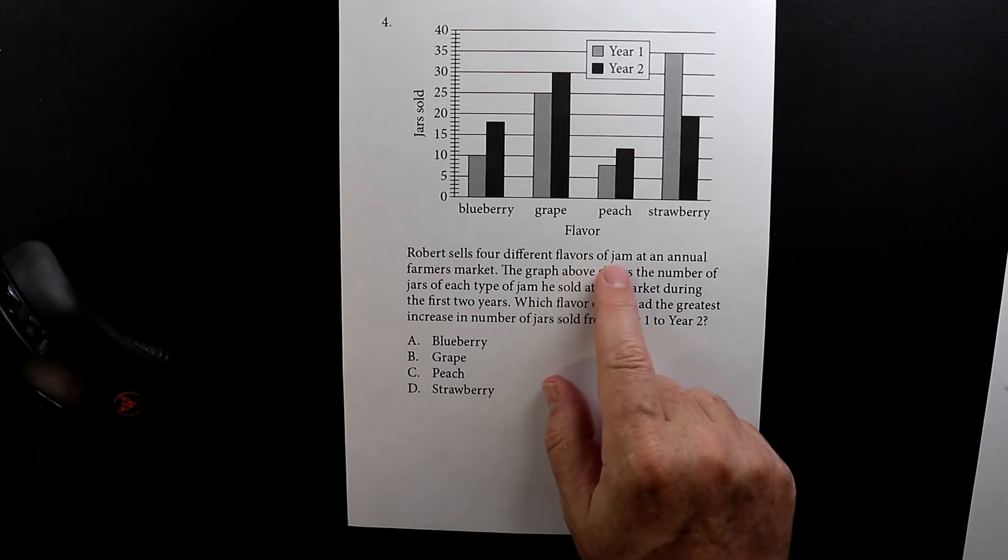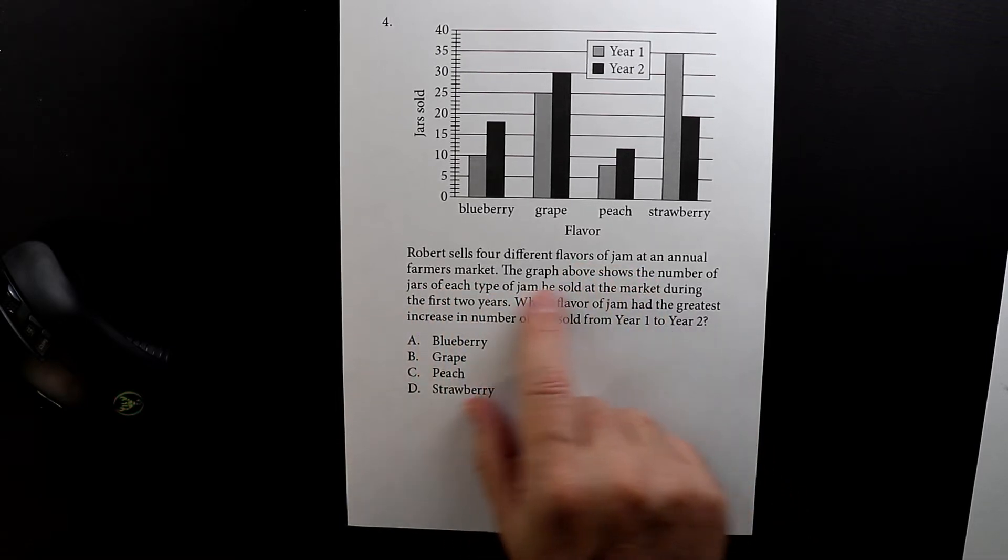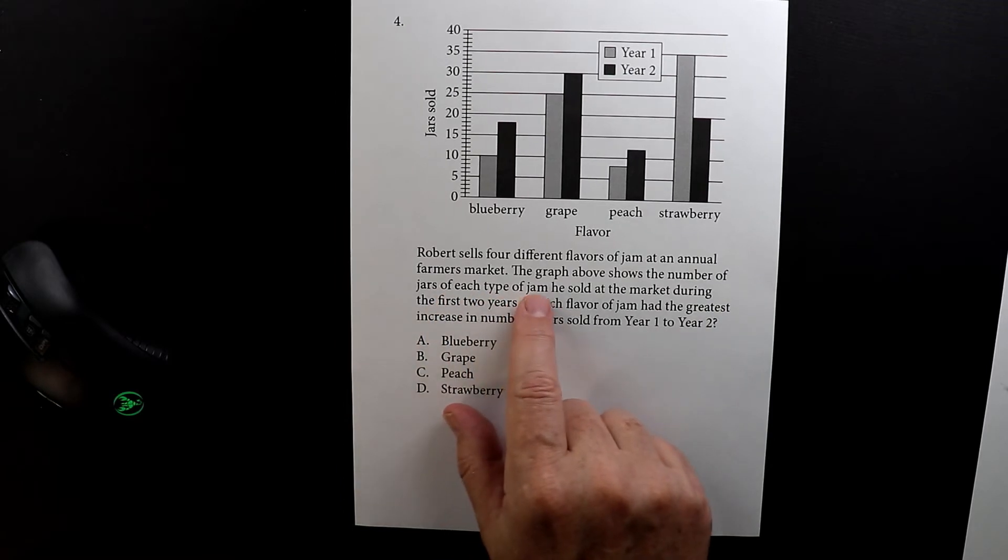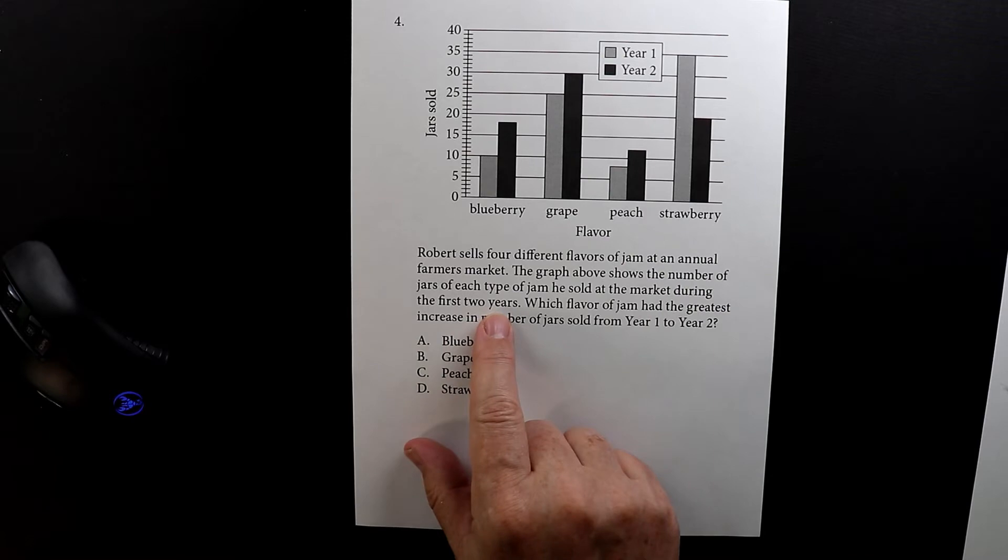So he sells these four different flavors of jam at an annual farmers market. The graph above shows the number of jars of each type of jam or jelly he sold at the market during the first two years.